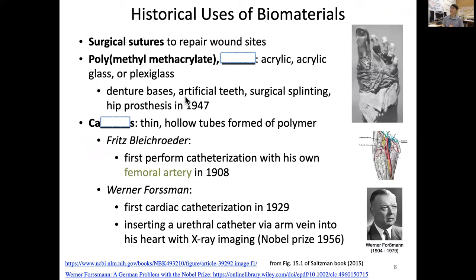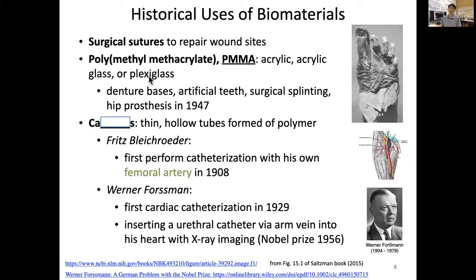Now let's look at the history of biomaterials. Surgical suture to repair wound sites is probably one of the very first biomaterials. Another important material is polymethyl methacrylate (PMMA), also called acrylic glass or by its brand name plexiglass, which has been used for dental bases, artificial teeth, surgical splinting, and hip prostheses.